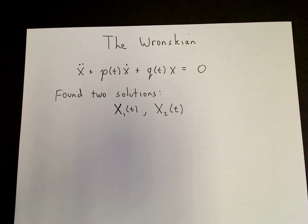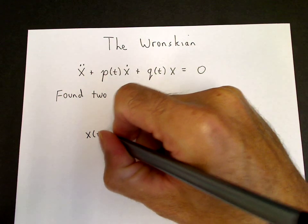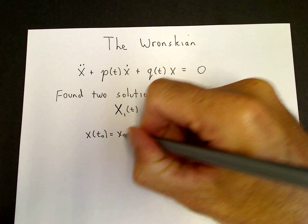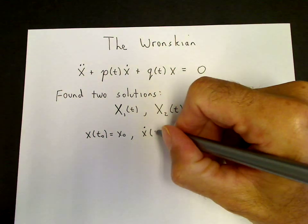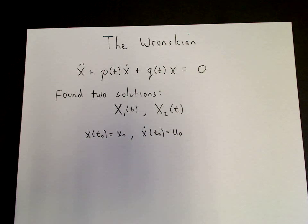And suppose that we found two solutions of this ODE by whatever means we were able to find them. And then the question that brings in the Wronskian is, can we use these two solutions to satisfy the initial conditions? So the initial conditions will be in general that x of some initial time is equal to x naught, and that x dot at some initial time is equal to u naught. So what is the condition on x1 and x2 such that using them to form a general solution can satisfy these initial conditions?